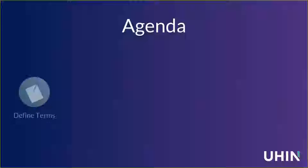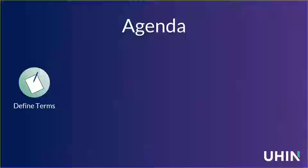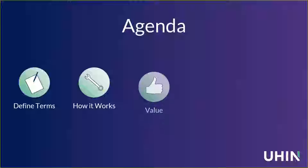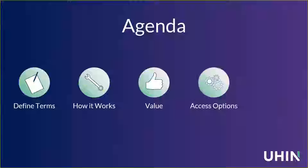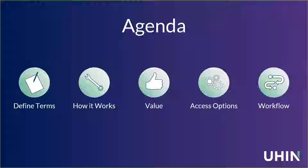Here's a more detailed look at what to expect. We're going to start off with defining some terms — I want to make sure that if I say a phrase or an acronym, you're thinking of the same thing I am. Then we'll talk about how eligibility works, because there are a couple of different variations. Once we know how it works, we can talk about the value and the difference it can make in an office workflow. After that, we'll discuss different ways to access eligibility and different workflow considerations, and then we'll have time for questions and answers.